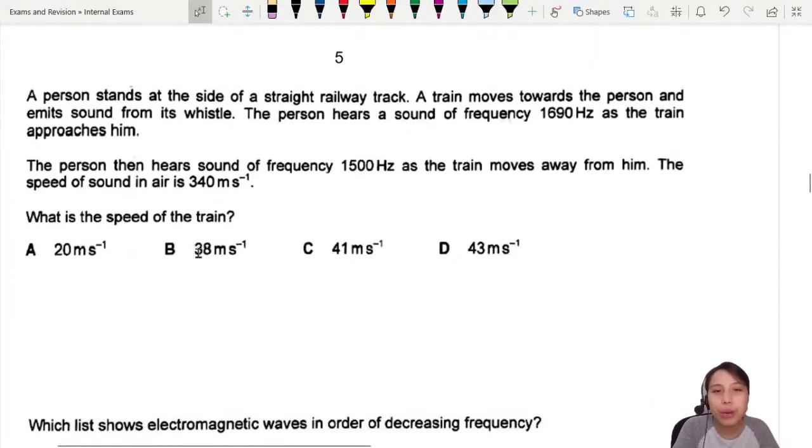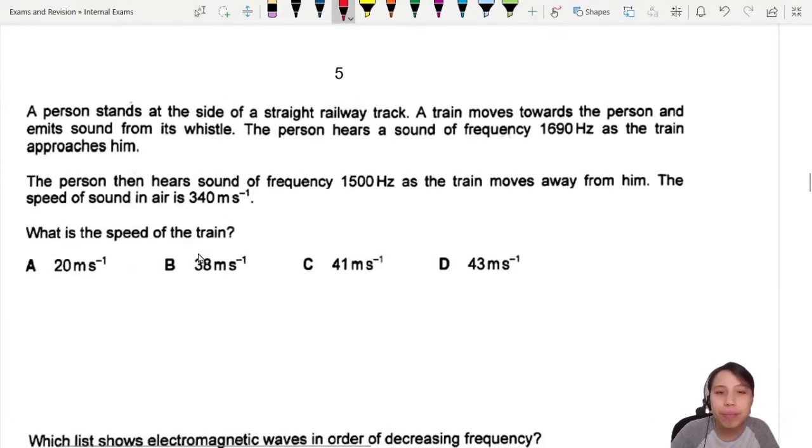A person stands at the side of a railway track and the train is moving towards the person. So here's a human, here's a train coming towards the human, and what's the sound? The train has some whistle. Let's pretend this dot is a train.